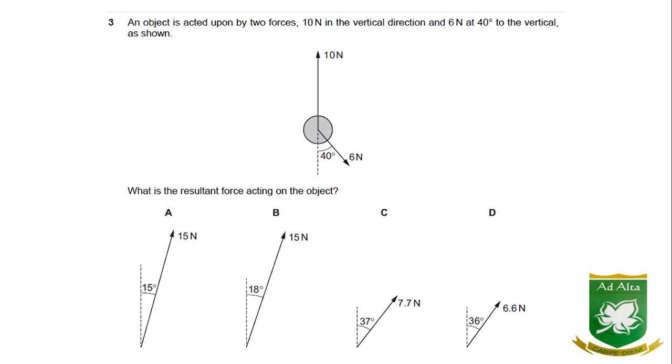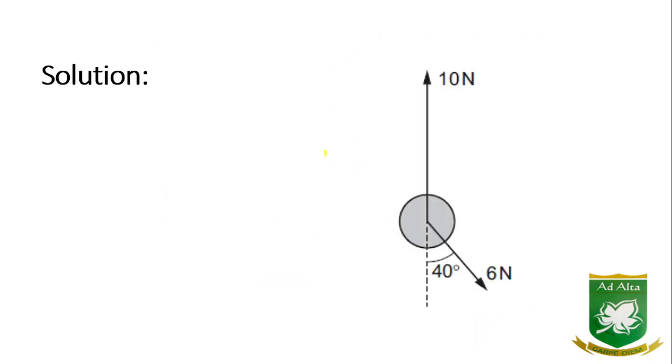This is another question from one of the past papers. Two forces are given: 10 Newton and 6 Newton. The angle between them is missing but another angle is given, so the solution would work like this: first,